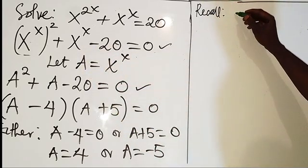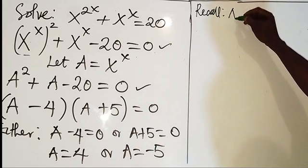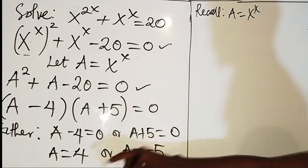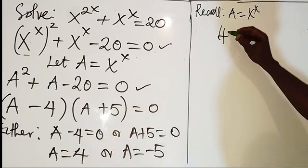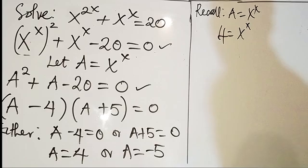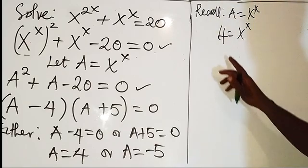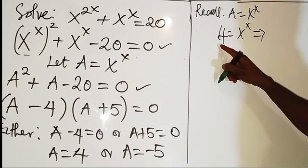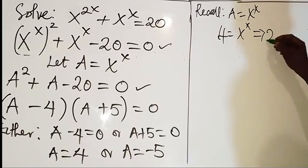So therefore we are going to be having A to be x to power x, where A is 4. So 4 equals x to power x.